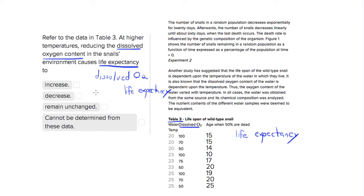We want to look at higher temperatures. Let's look just at this 25 since this is our highest temperature range. If we reduce the dissolved oxygen content, so it's going down from 100 to 50, what happens to the life expectancy?